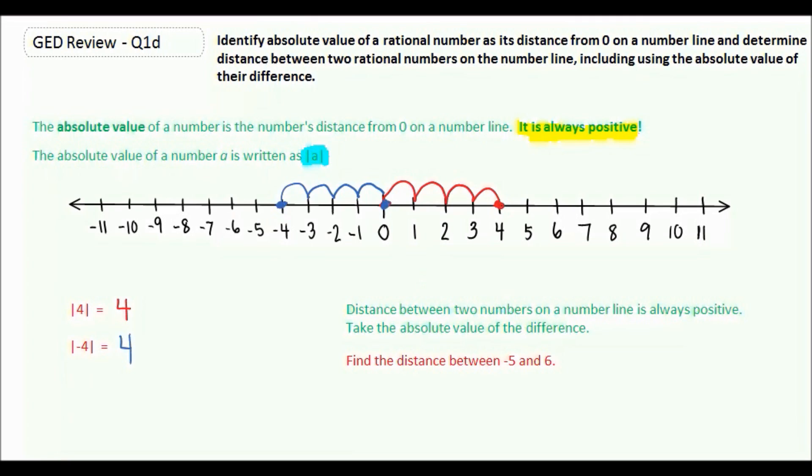So if we want to find the difference between negative five and six, we'd say first, let's subtract negative five minus six. That's the same thing as adding the opposite. So negative five plus negative six would be negative eleven. But we want the distance, so it's the absolute value of that, which means the distance between negative five and six is eleven.